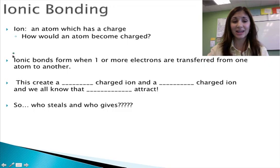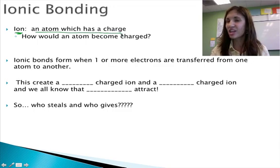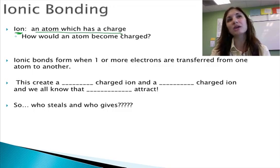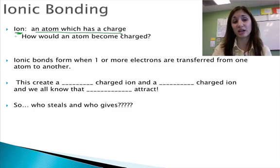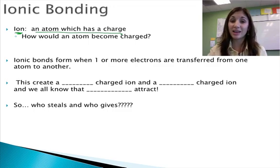So important here: an ion is an atom that has a charge. Protons are forever, right? So what could I lose or gain that would give me either a positive or negative charge? That's right. I'd have to gain or lose an electron.